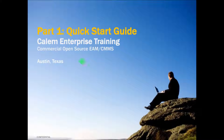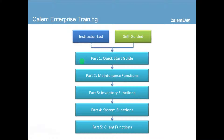Hello everyone, my name is Clay. Today I'm going to go over the Quick Start Guide with you. The Quick Start Guide is the first part of Calum Enterprise training. The training includes five areas. It can be instructor led or it can also be self-guided.